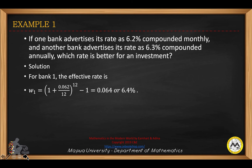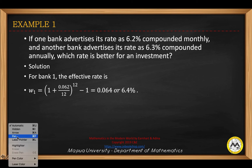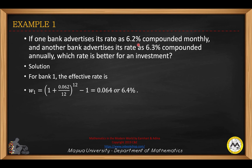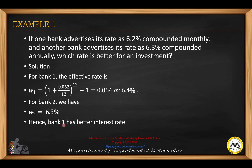For bank one, the effective rate for 6.2% compounded monthly: J will be 0.062 in decimal form, and we have 12 months in a year, so the quantity raised to 12 minus 1 gives 0.064, or 6.4%. Bank two only offers 6.3%, so if you are the investor, you will choose option number one.